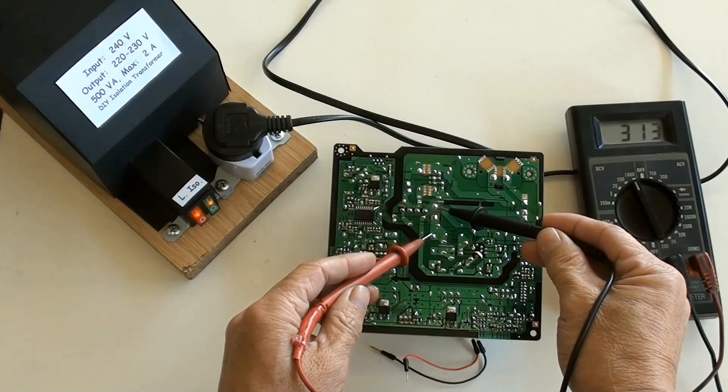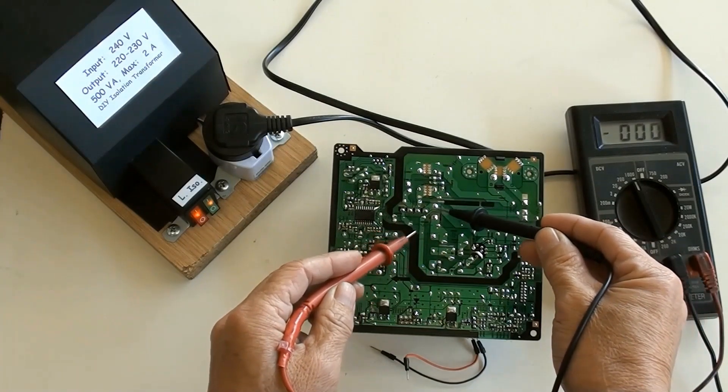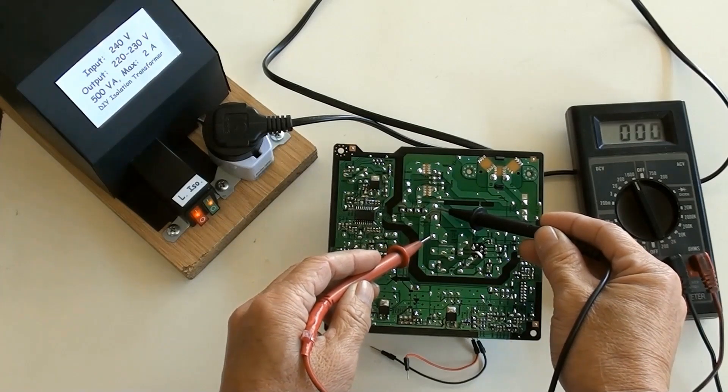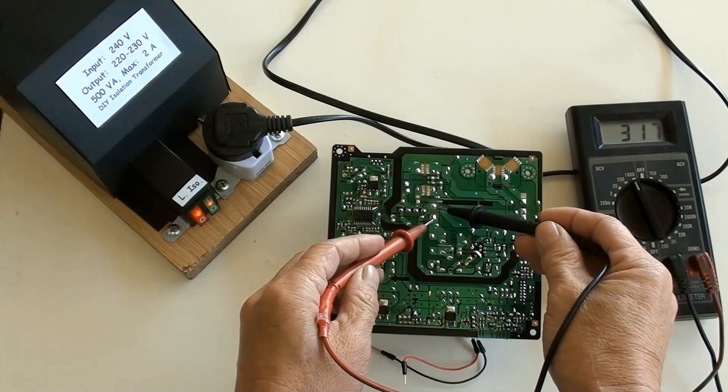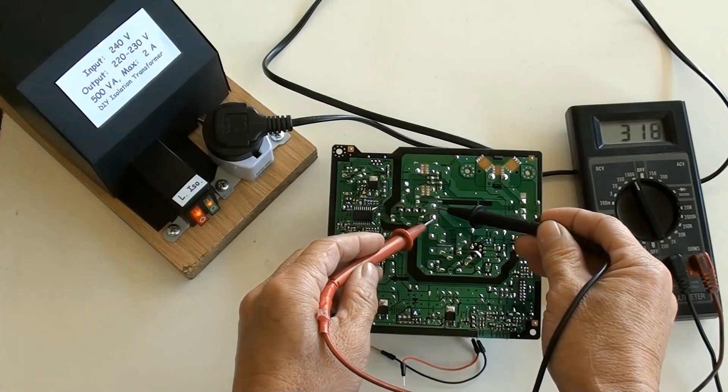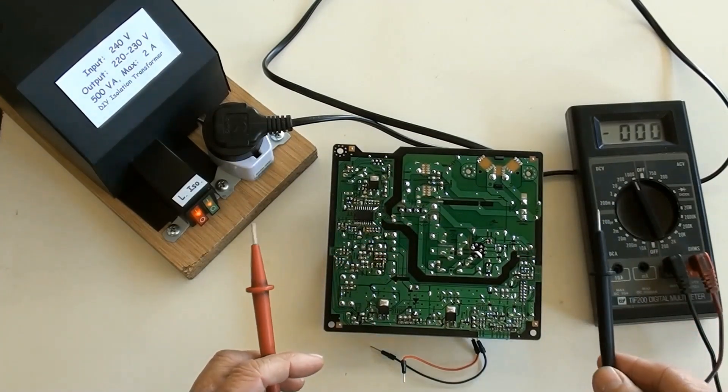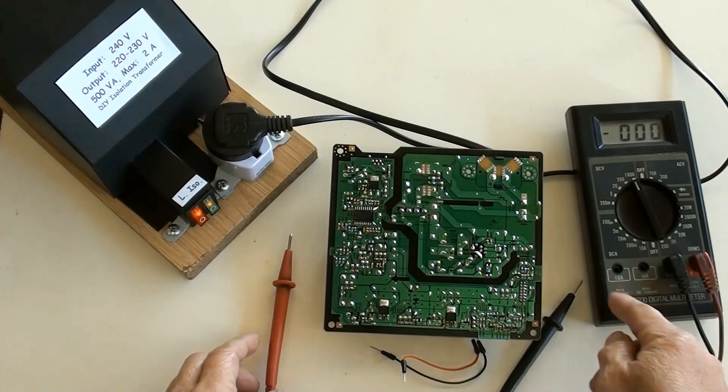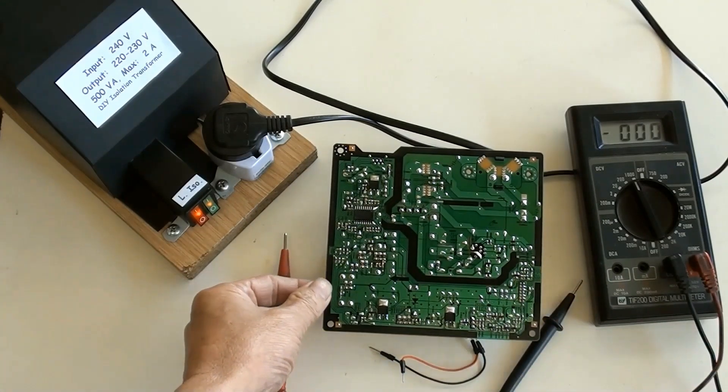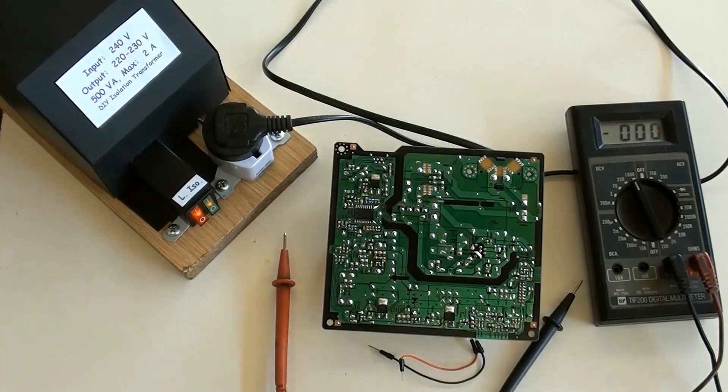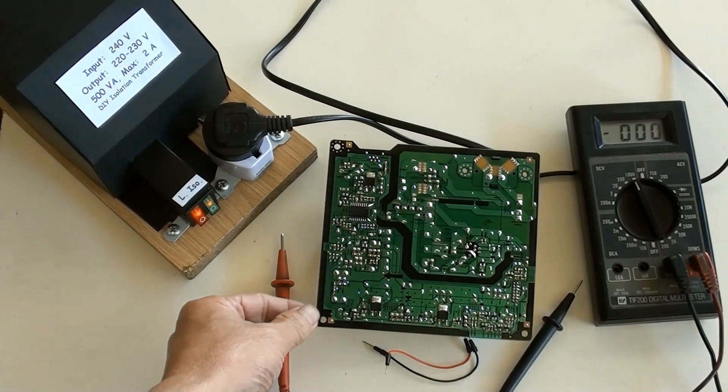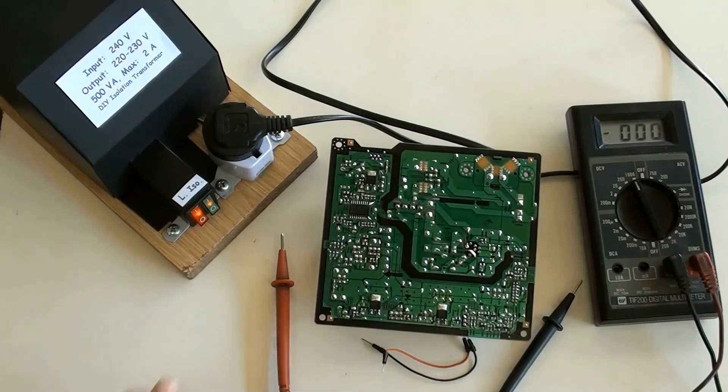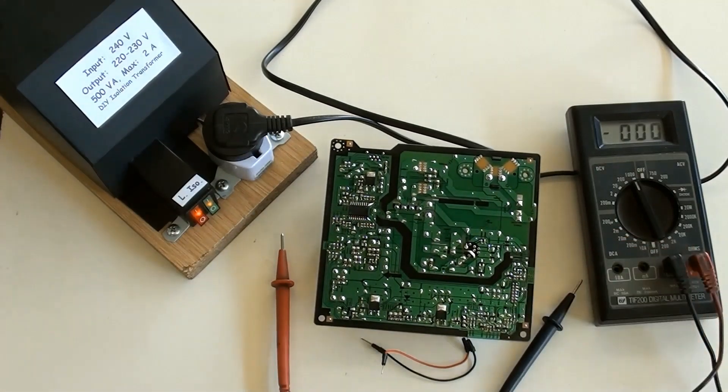During measurement or diagnostics by using a multimeter, your fingers might unintentionally contact the circuit board on the high voltage part. As long as you touch one part only, like this, you would not get electric shock. That is the advantage of using an isolation transformer in this circumstance.